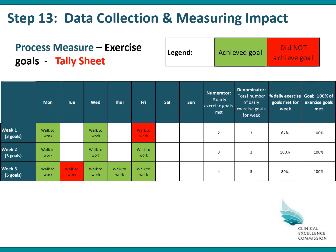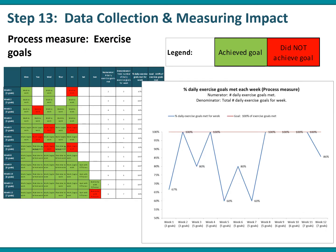Another thing David might collect information on is his exercise goals set each week, collected in what we call a tally sheet. In week one he had three goals and achieved two — 67%. Week two he walked to work all three times. Week three he had five goals and achieved 80%. This information can also be graphed in a run chart, showing he wants to achieve 100% of his weekly goals.